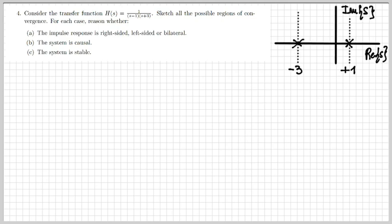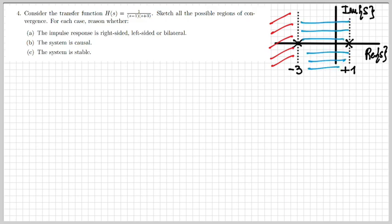Let's draw the poles of the system. There's a pole at plus one and a pole at minus three. The region of convergence is always delimited by the poles, so there are three options: Re(s) less than minus three, Re(s) between minus three and plus one, and Re(s) to the right of plus one. We'll study these three cases one by one.